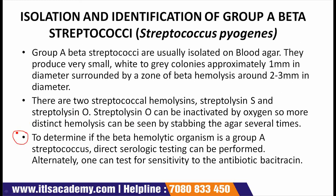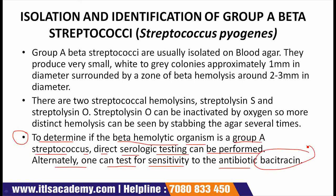To determine if the beta hemolytic organism is a group A streptococcus, direct serological testing can be performed. Alternatively, one can test for sensitivity to the antibiotic bacitracin. Only streptococcus pyogenes among the group A beta streptococci is sensitive to bacitracin, as shown by a zone of inhibition around a taxo A disc. The taxo A disc is a paper disc containing low levels of bacitracin.